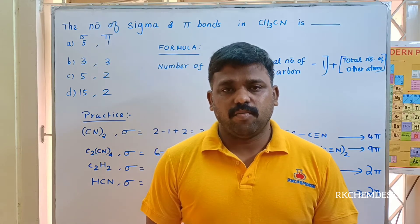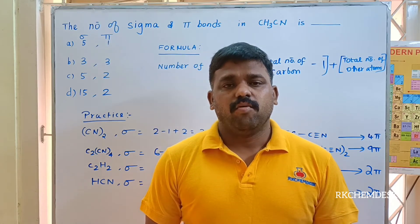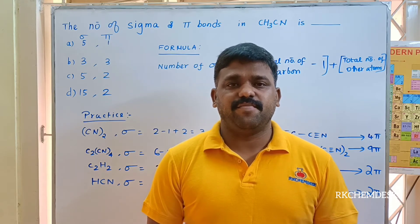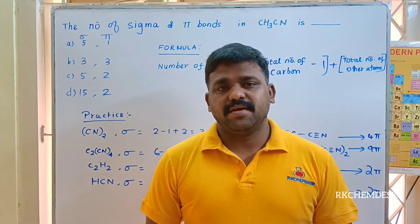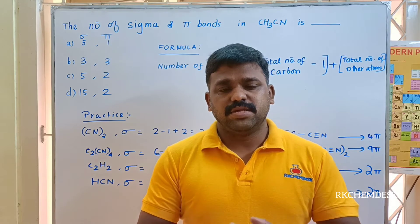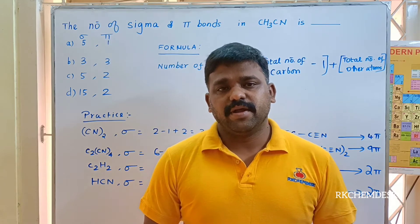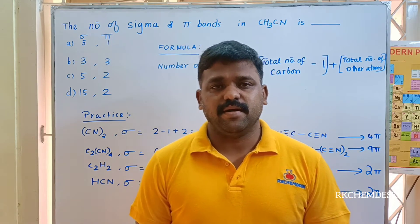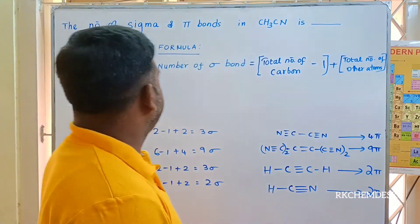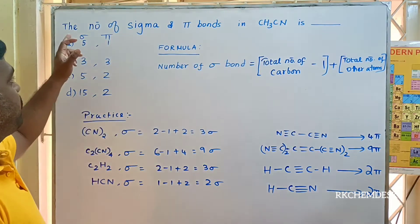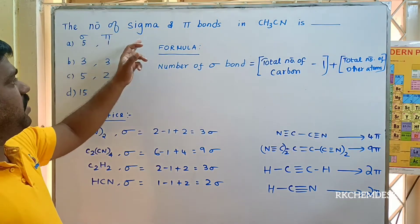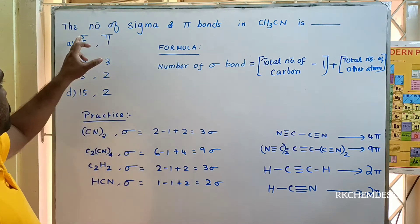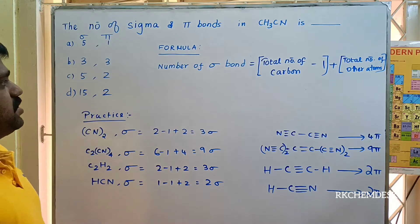In this session, we will talk about the number of sigma bonds and pi bonds — how to identify the number of sigma bonds and pi bonds. So the first question: the number of sigma bonds and pi bonds in methyl cyanide. You have four choices for sigma bond and pi bond.